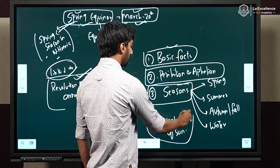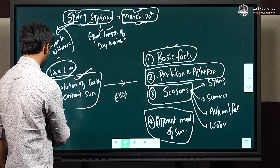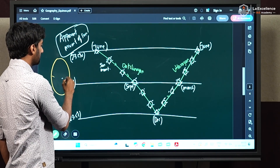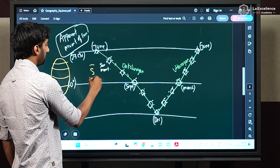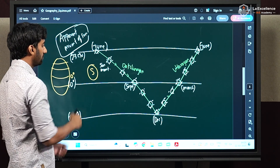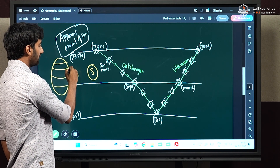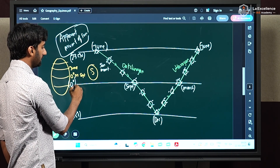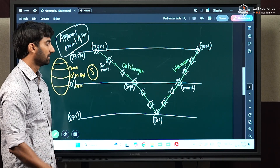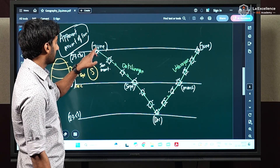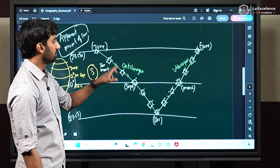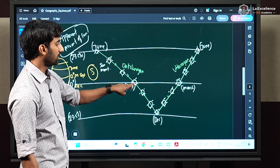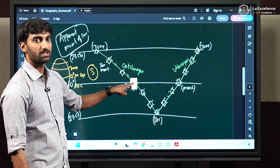Now we will see the concept called apparent movement of sun because of revolution. When we studied about seasons, we saw that sun rays fall vertically over the equator in March, vertically over the Tropic of Cancer in June, again on the equator in September, and on the Tropic of Capricorn in December. On June 21st, the sun's position is on the Tropic of Cancer. From July through September, sun travels from the Tropic of Cancer towards the equator, and on September 22nd, the sun's position is on the equator.